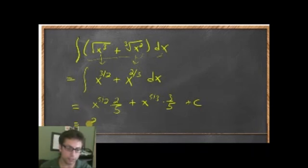Final answer will be 2 fifths x to the 5 halves plus 3 fifths x to the 5 thirds plus c.